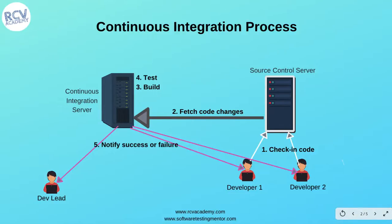For example, you have two developers or a development team that is working. They check out the code from the main branch, do some development, and then check in the code. Developer one and two check in the code to the source control server, which is the server that maintains the code repository.